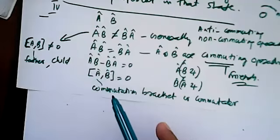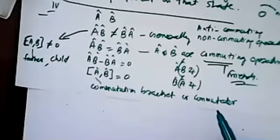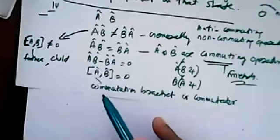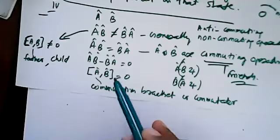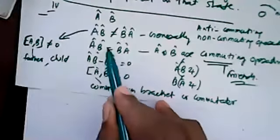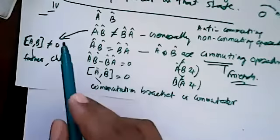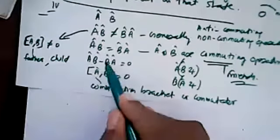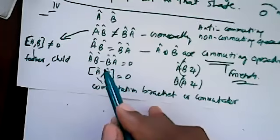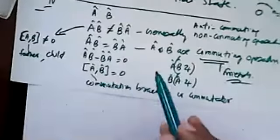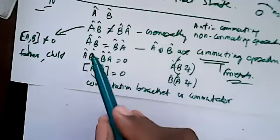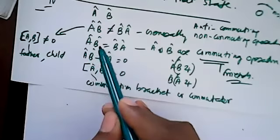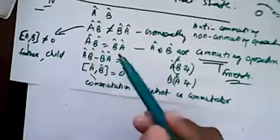The commutation bracket or commutator is written as AB minus BA. If they are commuting, this commutator is zero. If they are not commuting, the commutator is not equal to zero. This is the expansion of the commutation bracket — it simply means interchanging the position of the operators. If the operators interchange their position and nothing happens to the system, they are commuting.